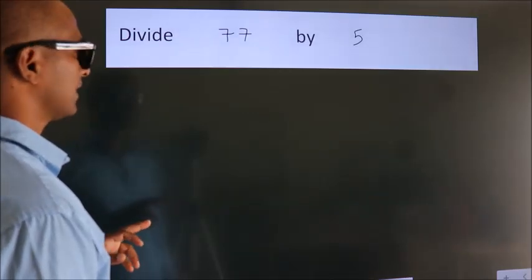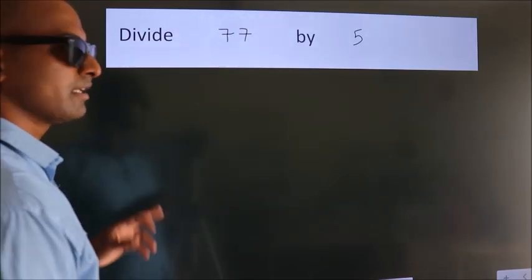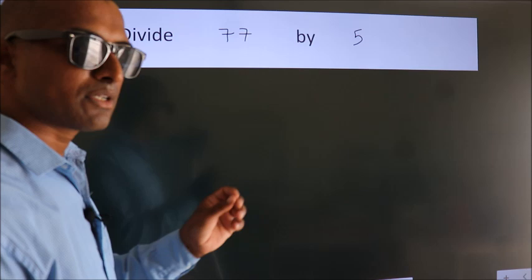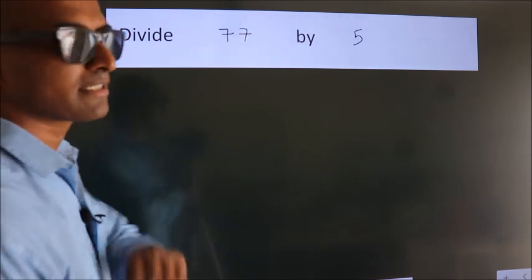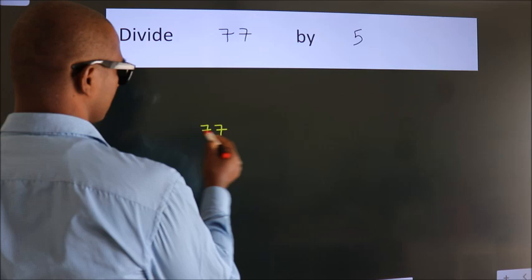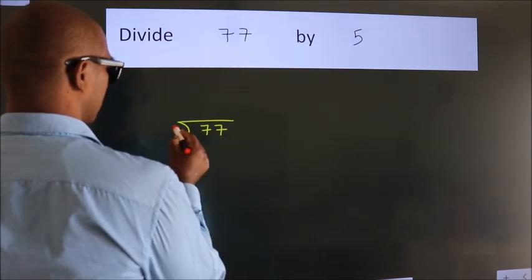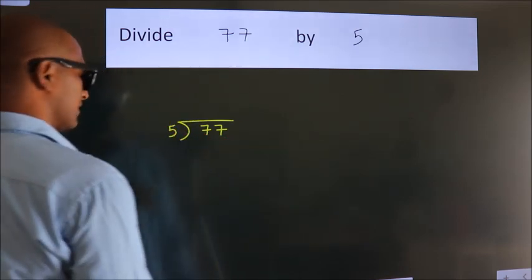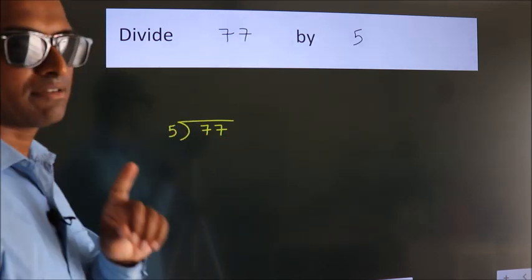Divide 77 by 5. To do this division, we should frame it in this way. 77 here, 5 here. This is your step 1.